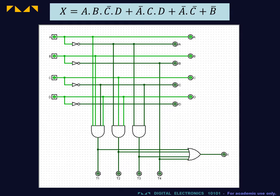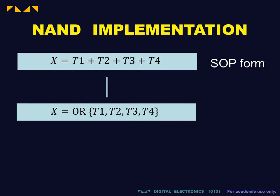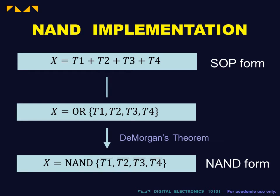Consider once more the SOP expression as the OR sum of product terms. In applying de Morgan's theorem, the OR operation is replaced by the NAND operation. Simultaneously, each term is inverted.